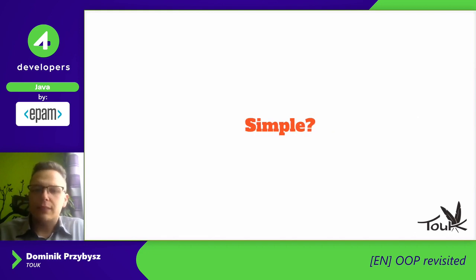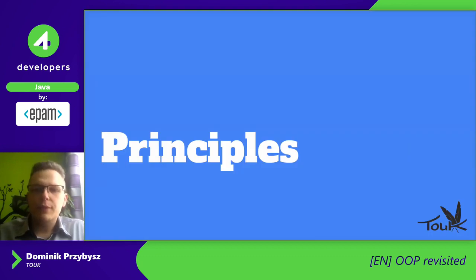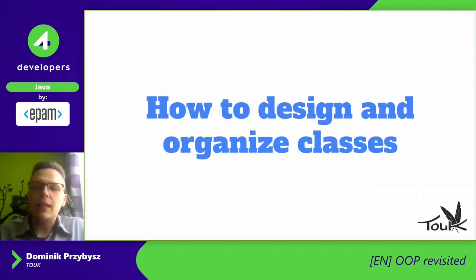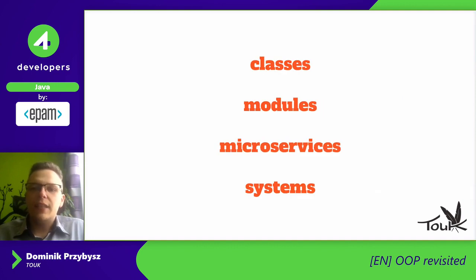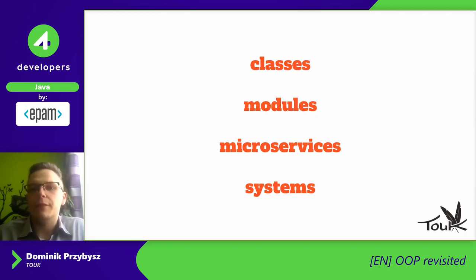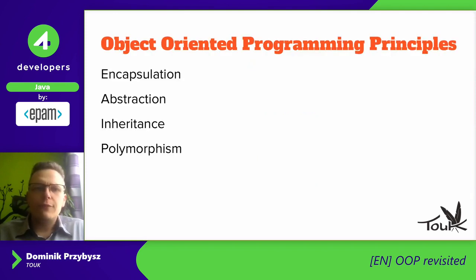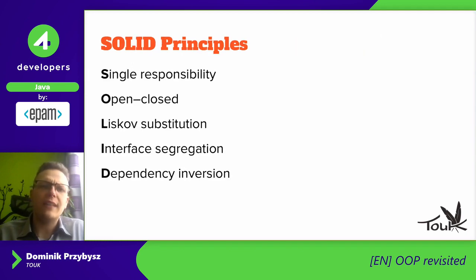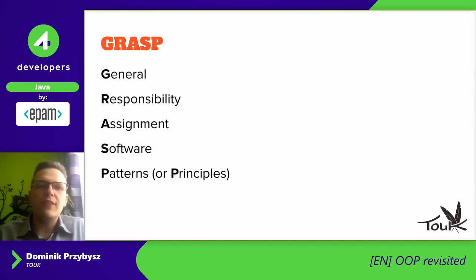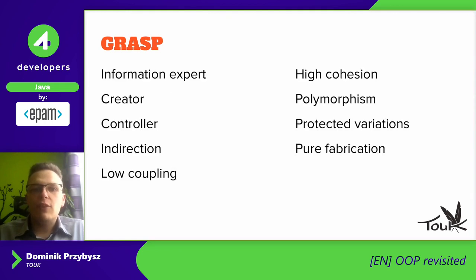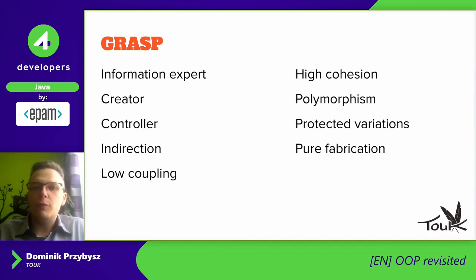Probably you've heard about that simple definition. But there are also some principles, and they are really helpful for how we can design and organize classes inside our project. They work very well on several levels — not only at the class level, but also for designing modules, microservices, or even whole systems. We have four main basic principles: encapsulation, abstraction, inheritance, and polymorphism. We also have SOLID principles and GRASP.